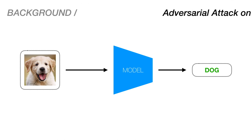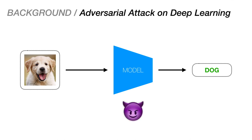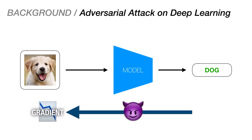Now let's dive deeper into how an adversarial attack works. The attacker, who has access to the model, can use the backpropagation algorithm to compute the gradients for a given input. The attacker then uses this information to make very minute, imperceptible changes to the image. This image, which still looks like a dog to humans, now gets classified as a cat, which is incorrect.